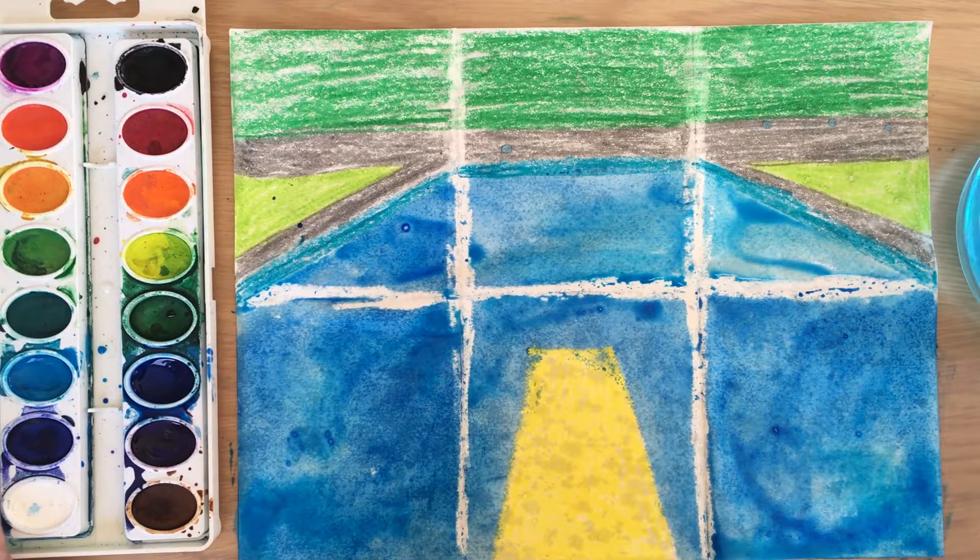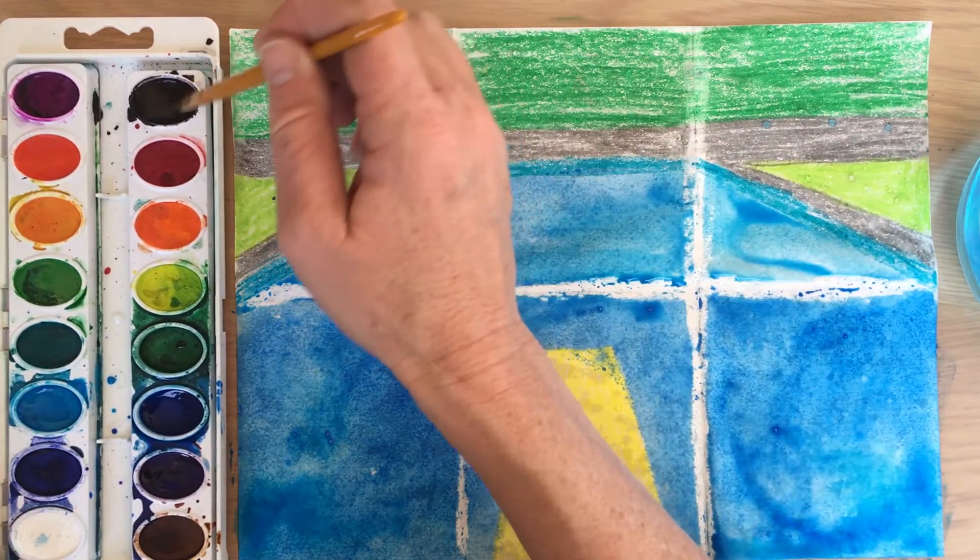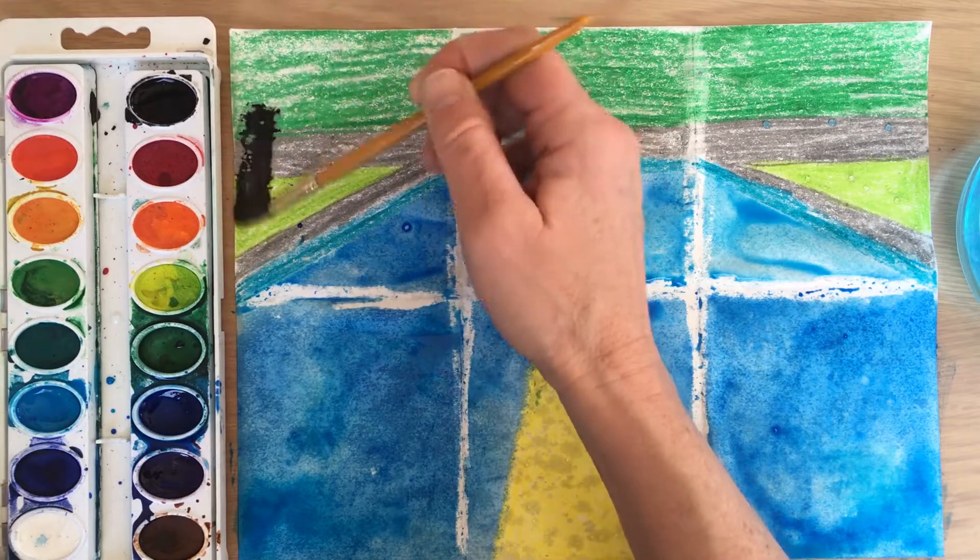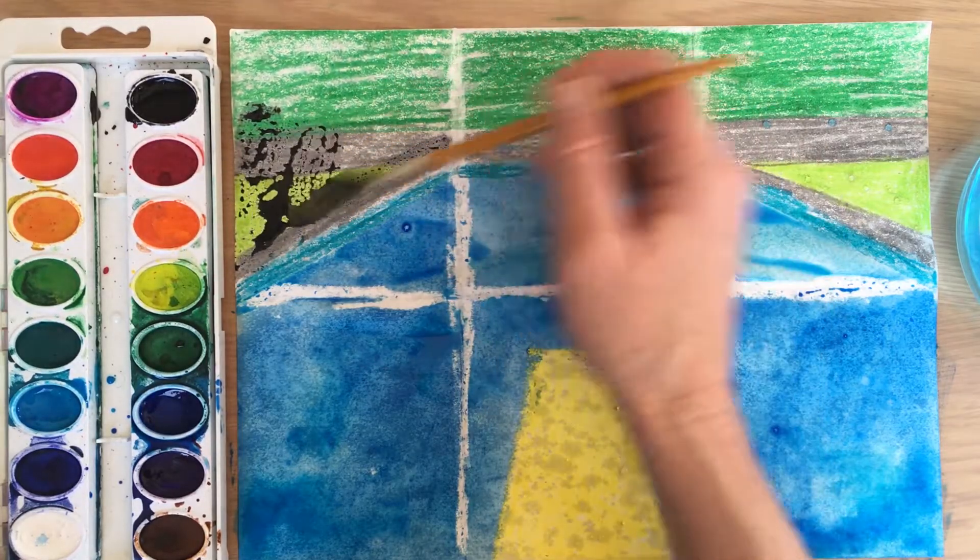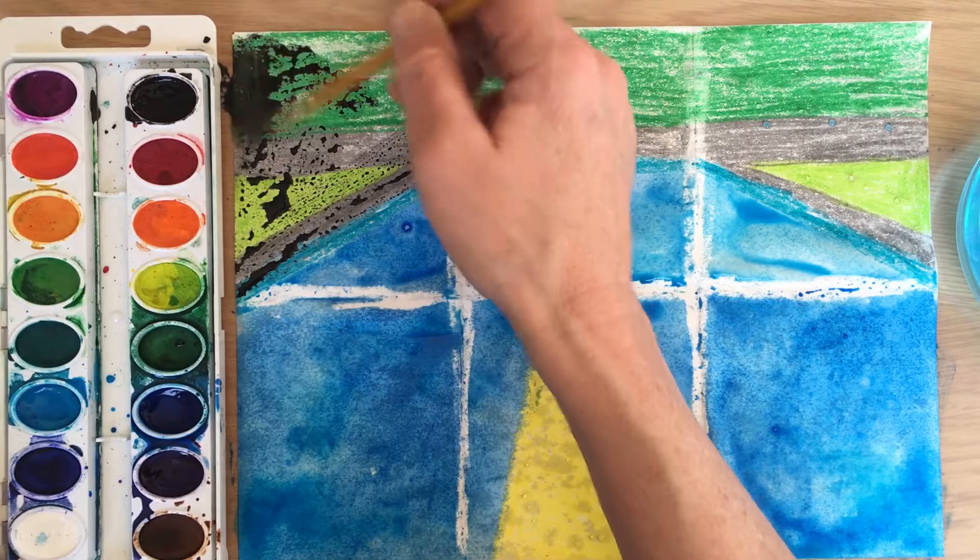For the top part we are going to add black paint, so put water in the black paint and just over the grass and the pool deck add some black paint.